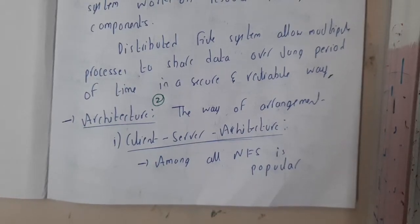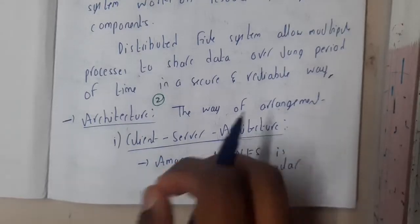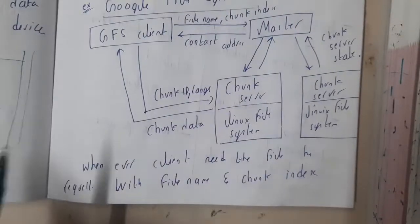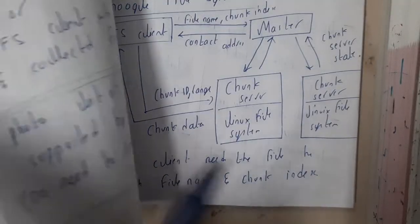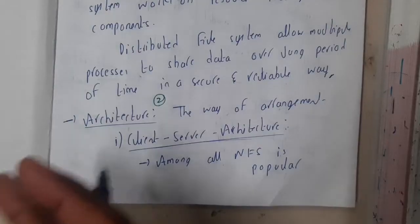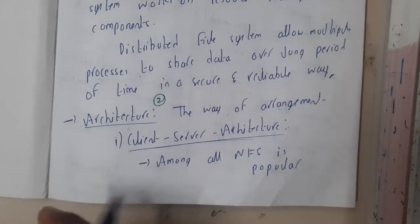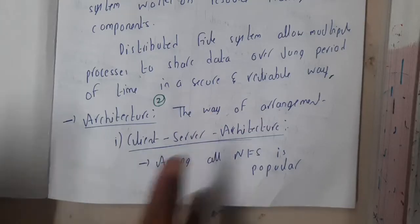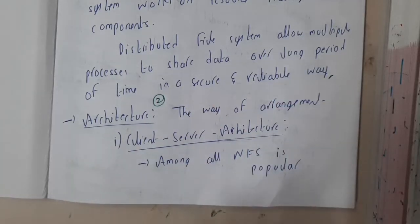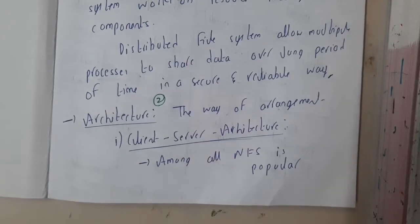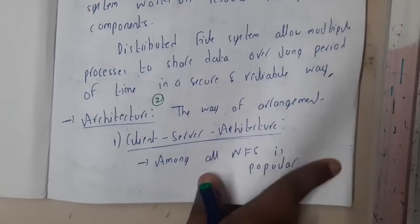In this lecture, let us go through the architecture of distributed file systems. There are two different architectures: first, we will discuss the common client-server architecture, and in the next lecture we will discuss the clustering architecture. Architecture refers to the way we arrange the components, devices, or systems. The first type is client-server architecture, among which NFS is popular.